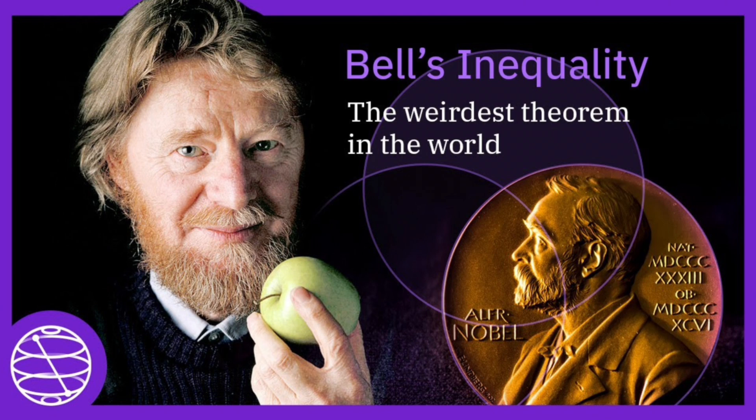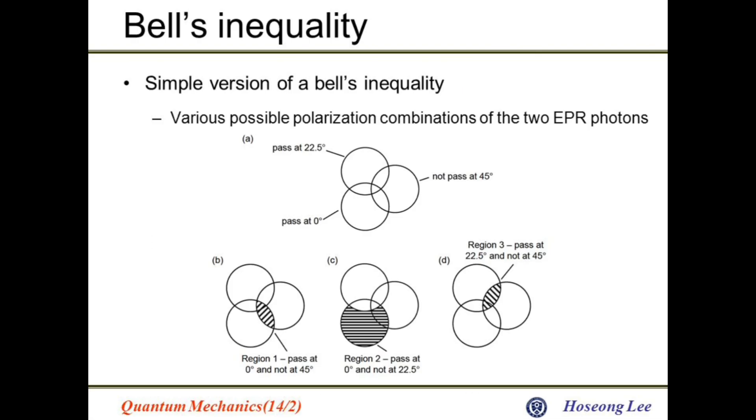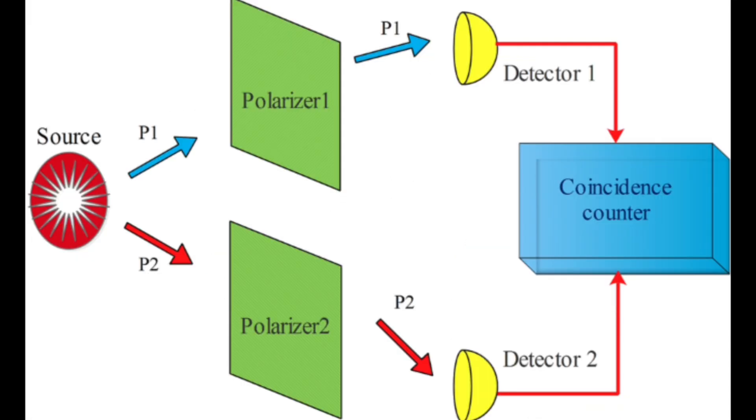Many Worlds Interpretation. Another approach to completeness is the Many Worlds Interpretation, which avoids wave function collapse by suggesting that all possible outcomes of a quantum event actually occur, each in its own branching universe. This interpretation suggests that quantum mechanics is complete but requires the existence of multiple realities.